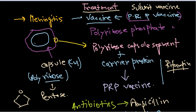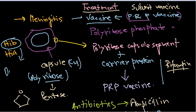The capsule is one of the most important virulence factors. Depending on the chemical nature of the capsule and the sugars present, different types of bacteria vary — like Haemophilus influenzae type b, type a, and so on. Among these, Haemophilus influenzae type b, or HIB, is the most virulent because it usually causes meningitis. So we take the capsular part from HIB to prepare the PRP vaccine.